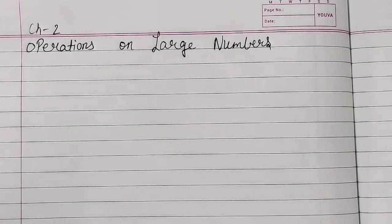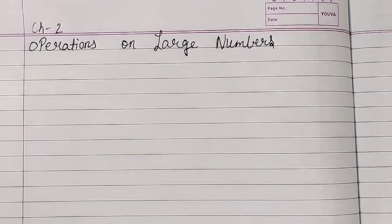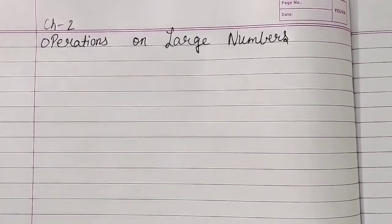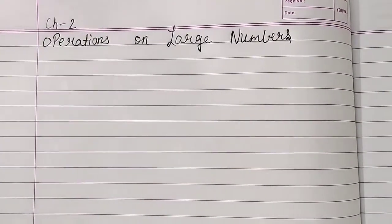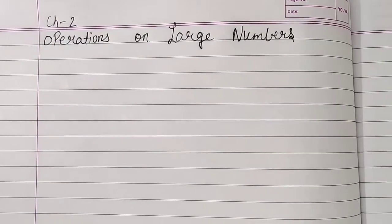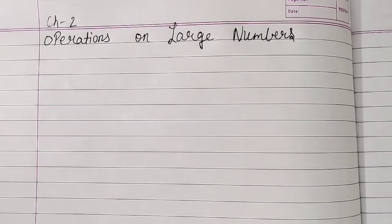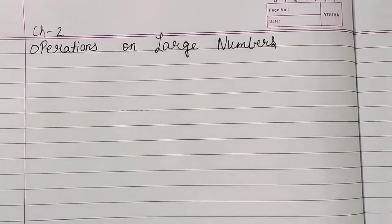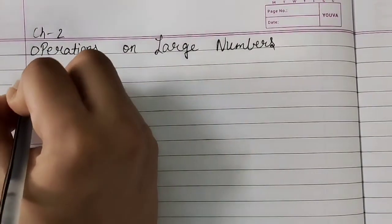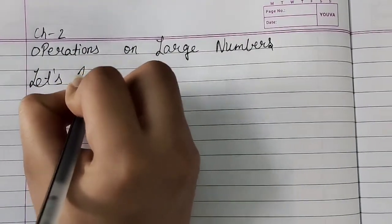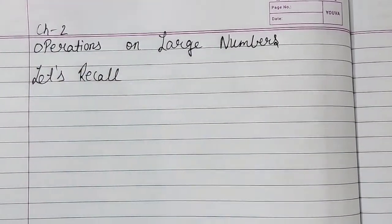Students, you will be thinking — what is Operations on Large Numbers? Operations on Large Numbers means we will do addition, subtraction, division, and multiplication in this chapter. First of all, we will start with 'Let's Recall.' So give the heading: Let's Recall.